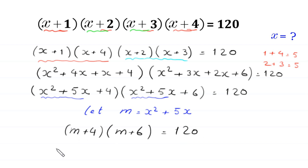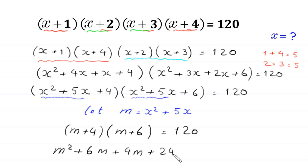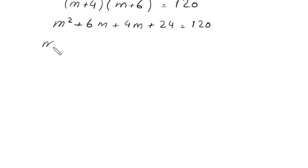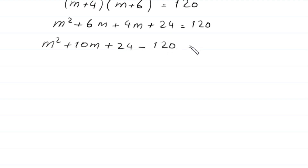Expanding: m times m gives m squared, m times 6 gives 6m, 4 times m gives 4m, and 4 times 6 gives 24. So m²+10m+24 = 120. Moving 120 to the left side: m²+10m+24-120 = 0, which gives m²+10m-96 = 0.